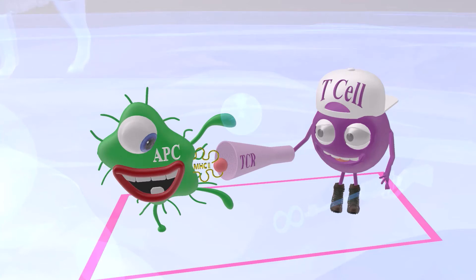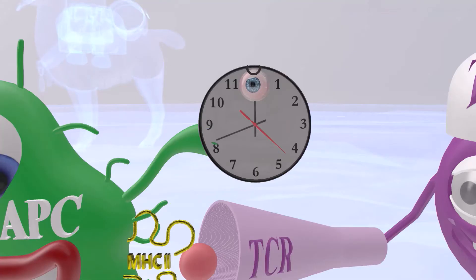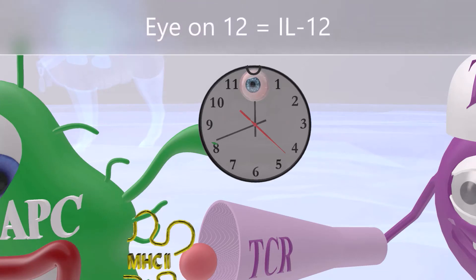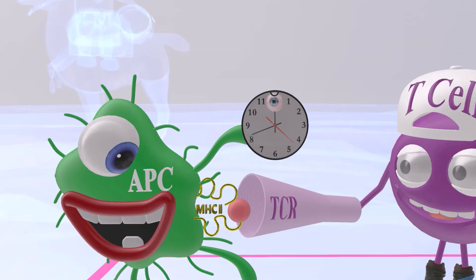The antigen presenting cell secretes IL-12, which is why over here the antigen presenting cell has this cock with the 'I' on the 12 — 'I on 12' for IL-12. When the antigen presenting cell communicates with the CD4 cell, it expresses IL-12.